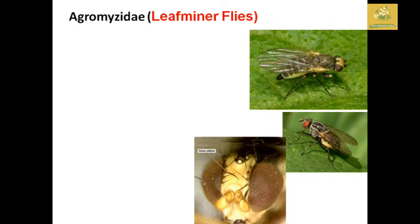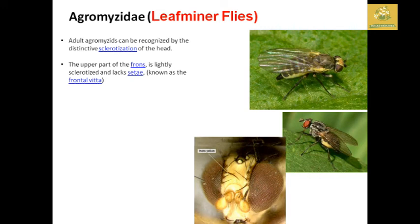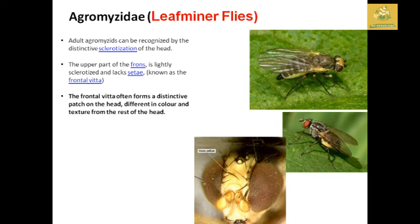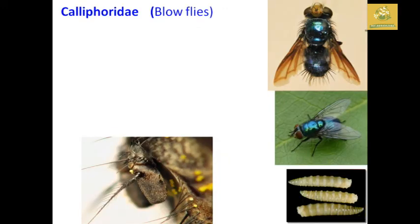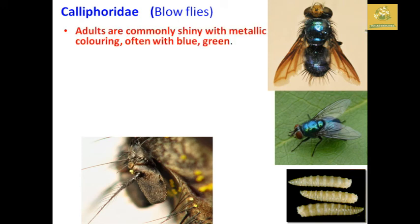Agromyzidae — the leaf miner flies. Adult Agromyzidae can be recognized by distinct sclerotization of the head. The upper part of the frons is lightly sclerotized, known as the frontal vitta, which forms a distinctive patch on the head, different in color and texture from the rest of the head. Wings are usually hyaline with darker markings. Some species can stridulate using a file on the first abdominal segment, scraped on the hind femur. Larvae mine into leaves, causing leaf drying, though economic loss is comparatively lower.